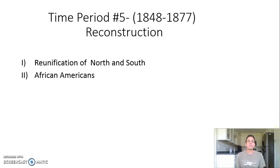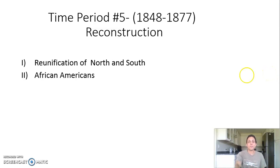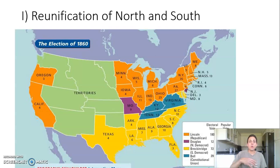Ladies and gentlemen, this screencast is going to continue to focus on time period number five. We're going to focus solely on the era of Reconstruction, which lasts from 1865 to 1877 — a time period directly following the Civil War. We're going to focus on the big questions like how the North and South are rejoining together, and what is the status of the newly freed African Americans and what is the federal government doing to protect their rights.